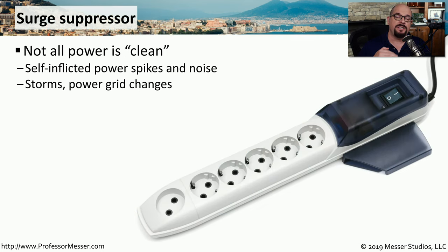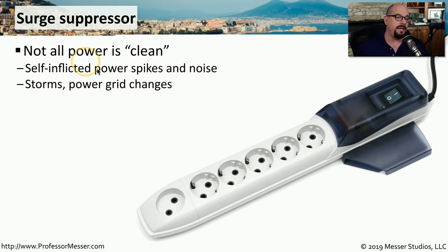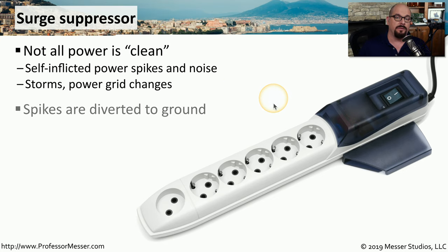Ideally, we would like a single stable voltage coming into our facility with no spikes. But occasionally there can be external sources, such as storms or power grid changes, that cause a spike of power through our main power connection. To minimize these spikes, we can use a surge suppressor, which will take the spike of voltage and put any excess power onto the electrical ground.